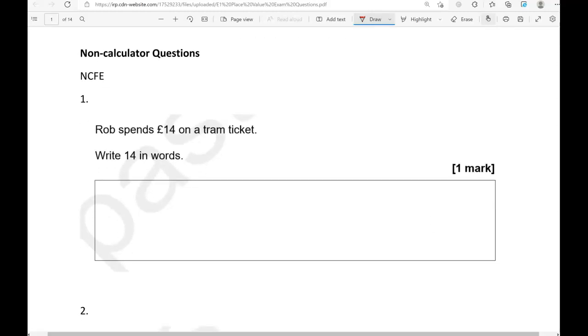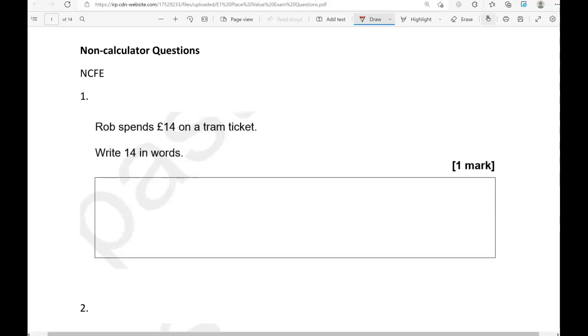Here is the first question. Rob spends £14 on a tram ticket. Write 14 in words. So 14. Fourteen. 10 and the 4 makes 14. That's why fourteen.